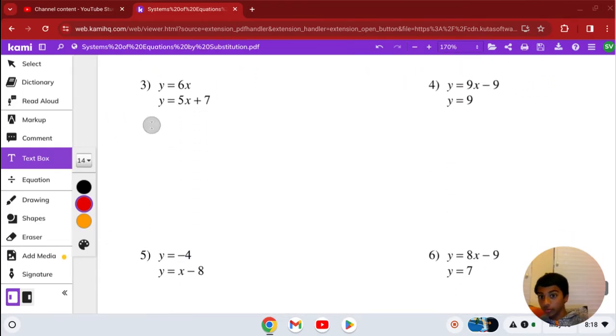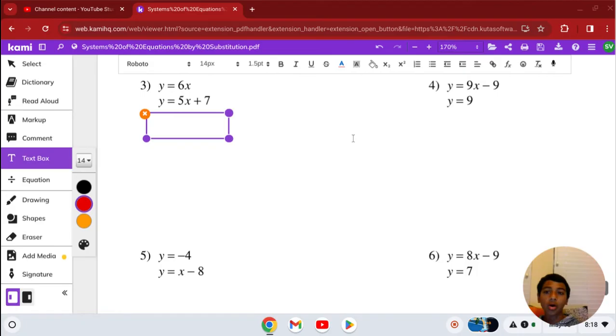This one's a bit different because you don't have a number like y equals 6 or something. You have y equals 6x. Same thing, we're essentially plugging it in, but this time it's going to be 6x equals 5x plus 7. Now we can solve the equation and subtract 5x from both sides. So 5x minus 5x is 0, and 6x minus 5x is x.